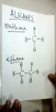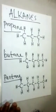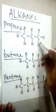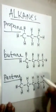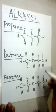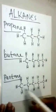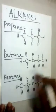Let's take more examples of alkanes. Our next is propane, C3H8. Number 4, butane, C4H10. Number 5, pentane, C5H12.